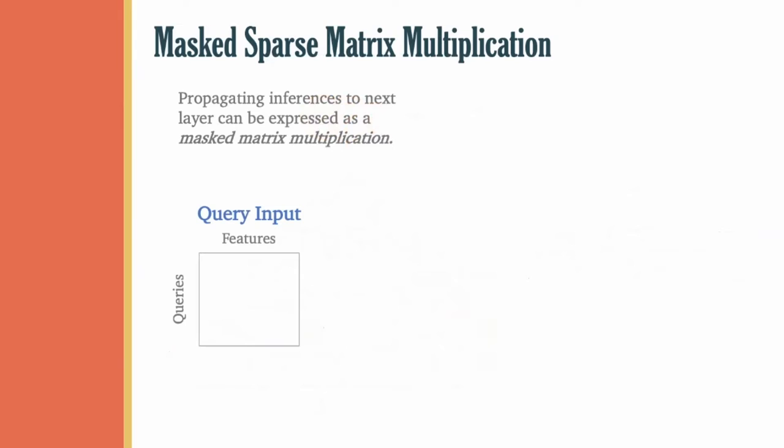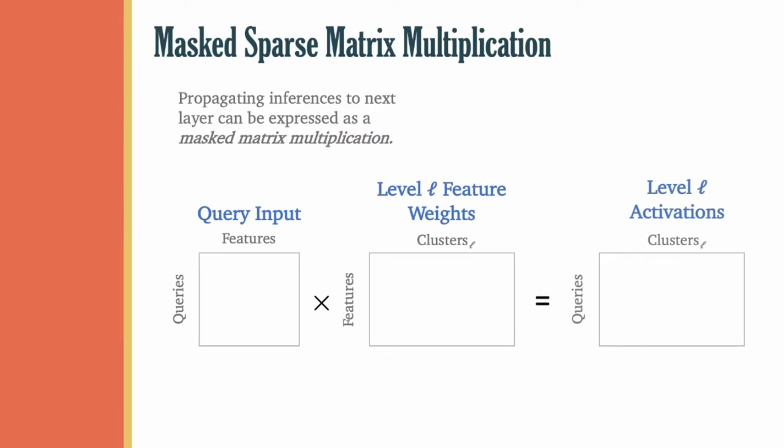First, on the left here, we have our query input, which is a sparse matrix whose rows correspond to sparse queries and whose columns correspond to query features. Next, for each layer of the tree, we also have a sparse weight matrix. Every column of this weight matrix corresponds to the activation weights of the model on a tree edge on that layer. The product of these two matrices produces a matrix of activations, which is then fed into a post processor function to yield predictions.